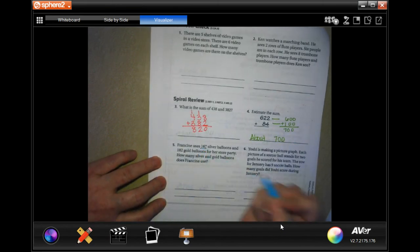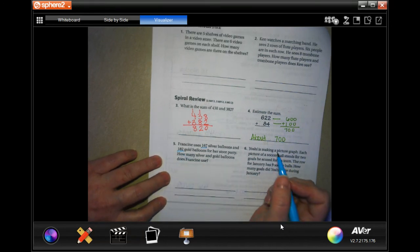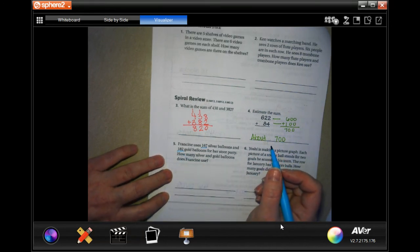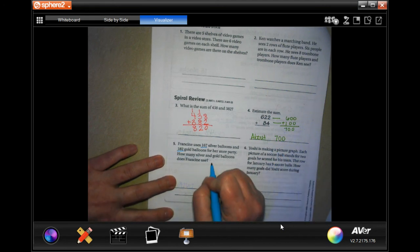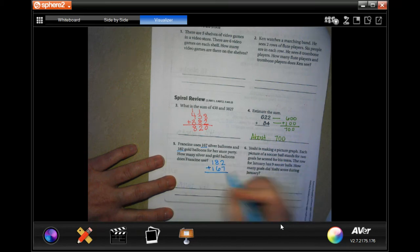Francine uses 167 silver balloons and 182 gold balloons for the store party. How many silver and gold balloons did Francine use? So, 182 and 167 and we have to add those to find out how many she used in all.